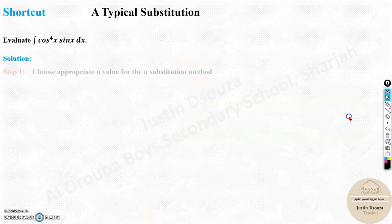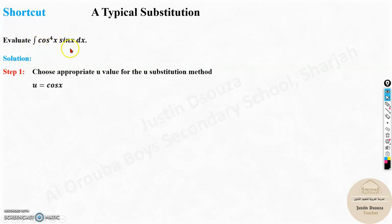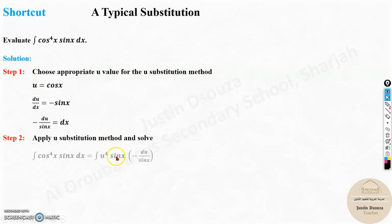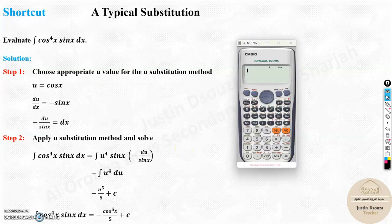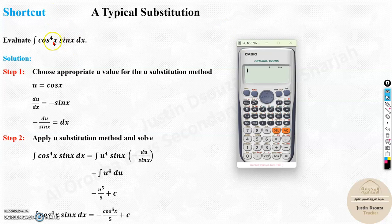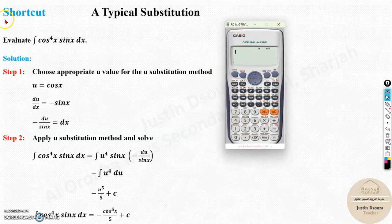This is a problem over here. We have to evaluate integral cos to the power of 4x sin x dx. It's a huge one. To solve this step by step, you can see over here this is how it is done. Now, is there an easier method? Yes, absolutely. Take out your calculator. Since this is in cos, it's in trigonometry, shift, change the mode, shift mode to radian.